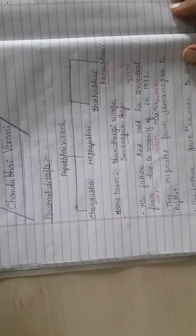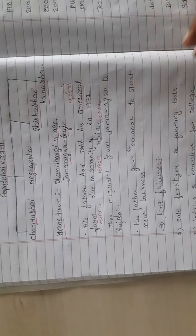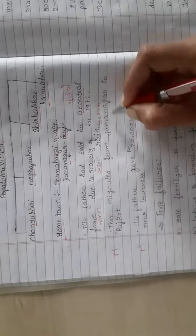They migrated from Jamnagar to Rajkot. His father gave him 20,000 rupees to start a new business in Rajkot. This is an MCQ topic - which city did they come to? Rajkot. How much money did he start the business with? 20,000 rupees.